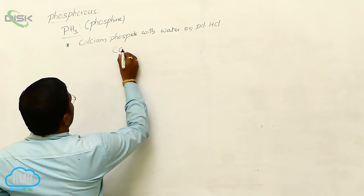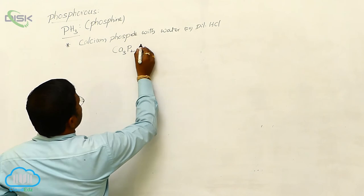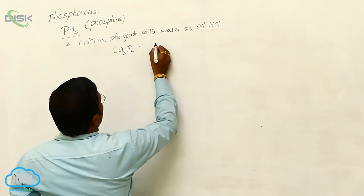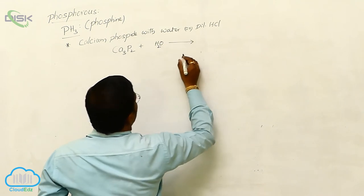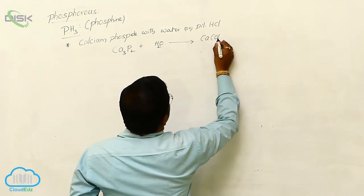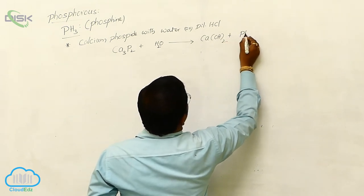So, once again, we can write the chemical reaction for this Ca3P2. It is called as calcium phosphide. So when calcium phosphide reacts with water it produces Ca(OH)2, calcium hydroxide, plus PH3.